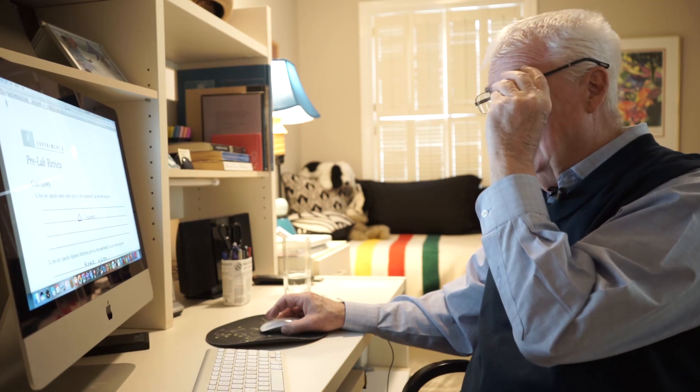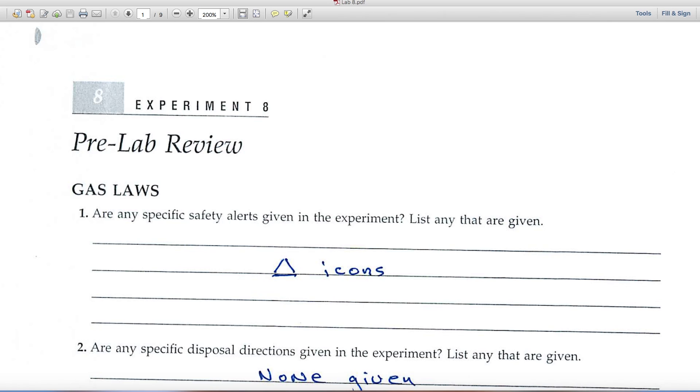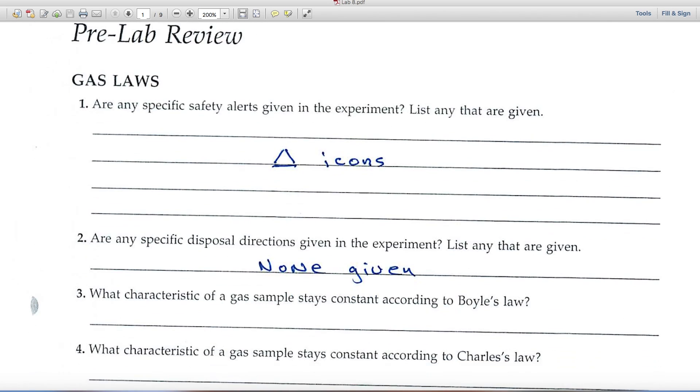Experiment eight deals with the gas laws. Let's have a look at the pre-lab review page. Question number one deals with specific safety alerts. You'll want to look for the triangle icons.